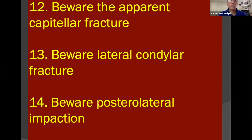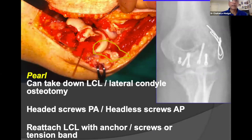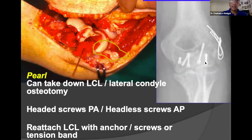Not all capitellar fractures are the same. They can be accompanied by lateral columnar comminution and posterolateral impaction. As Mike McKee showed, when a capitellar fracture has a double shadow, it is almost always a fracture extending past the capitellar-trochlear sulcus going all the way across. In such situations, a technique from Dr. Jupiter can be used — osteotomize the lateral condyle, which allows the elbow to be opened like a book on the medial complex, revealing the entire articular surface. After fixation, close the book and reattach the lateral condyle with a tension band.